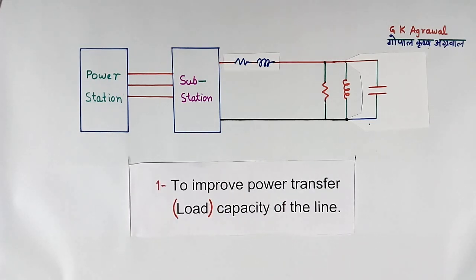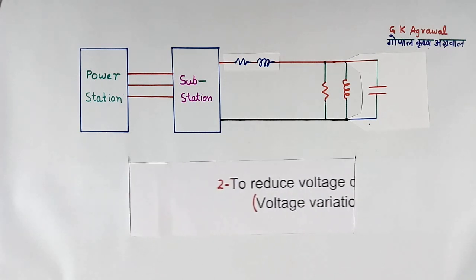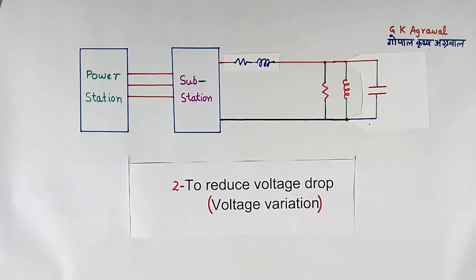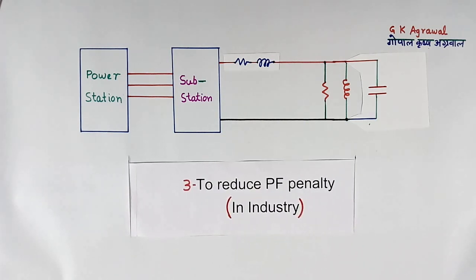I told you three reasons for power factor correction requirement here. First is to improve power transfer capacity of the line. Second is to reduce voltage drop or to reduce voltage variation here. And third is to reduce power factor penalty in industry.